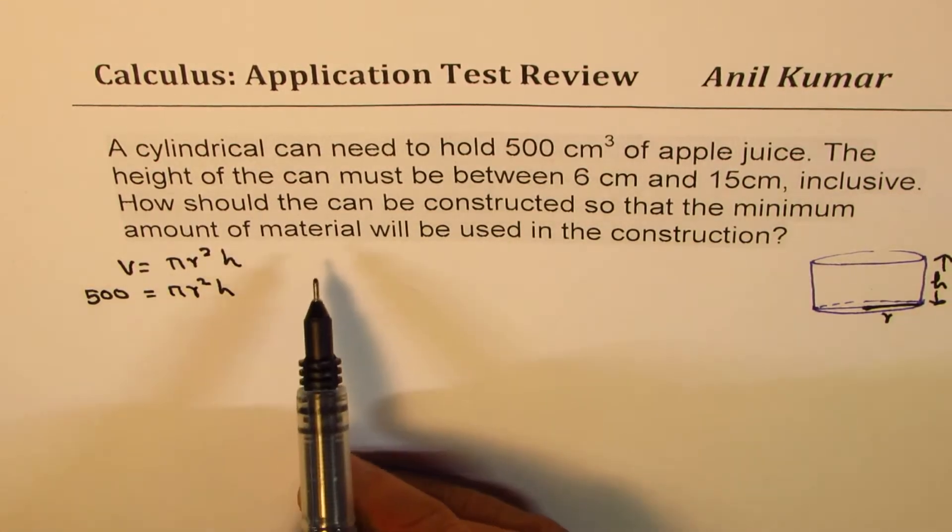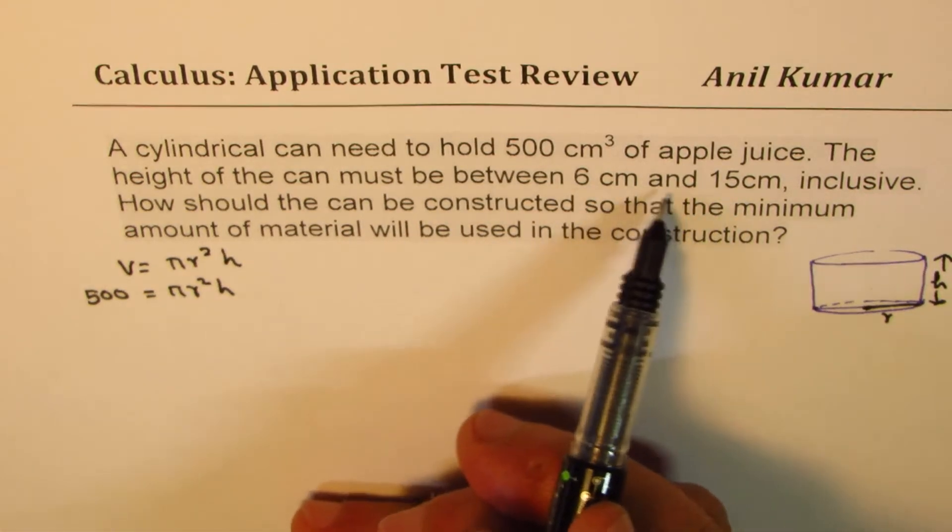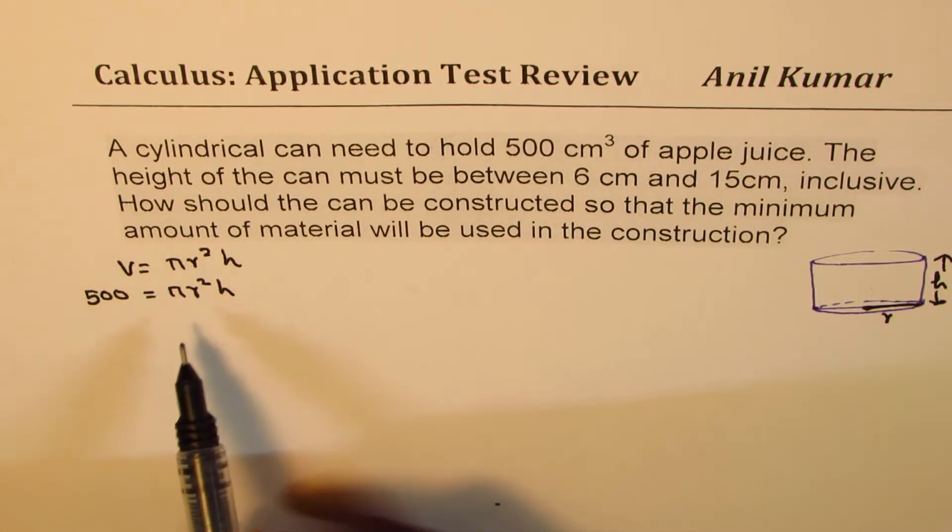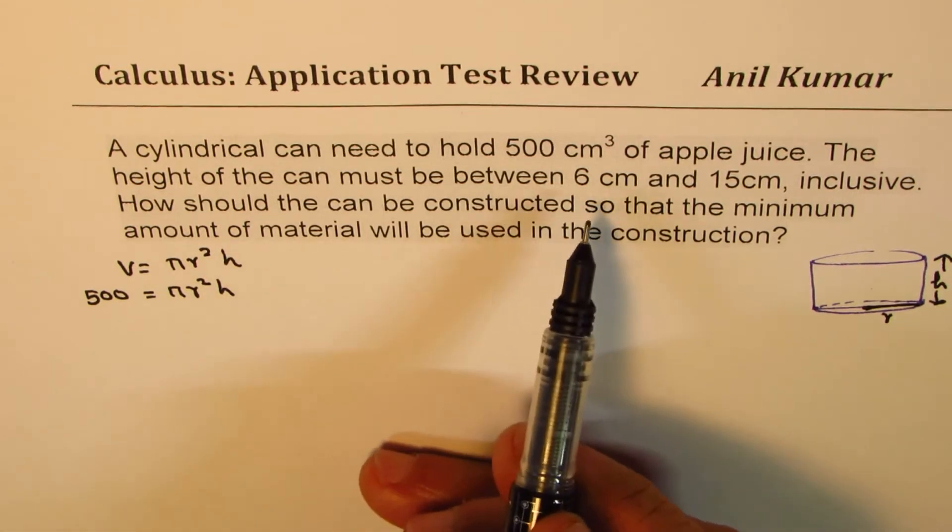Now in this particular example, we are given height in between 6 and 15 centimeters. So writing height in terms of radius may actually be better. Let's go with radius itself.